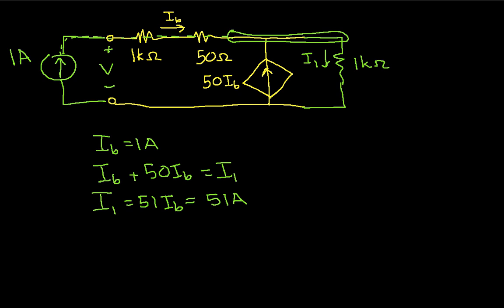Okay, now the voltage V, this will be the voltage across these two resistors plus the voltage across this 1k ohm resistor. So the voltage across the 1k ohm resistor, let's call this V1. V1 is 51 amps times 1k ohm, which is 51 kilovolts. This is a pretty large voltage.